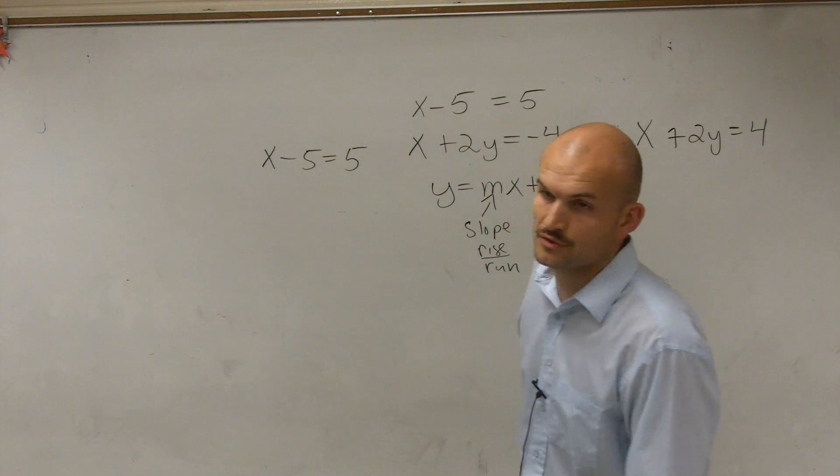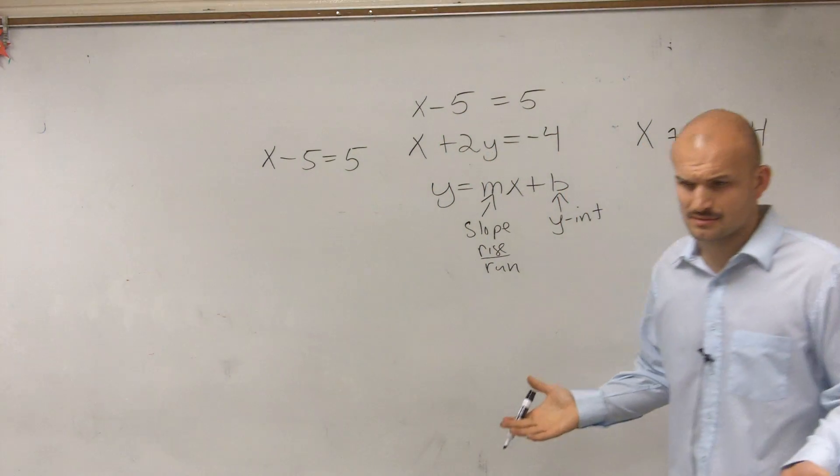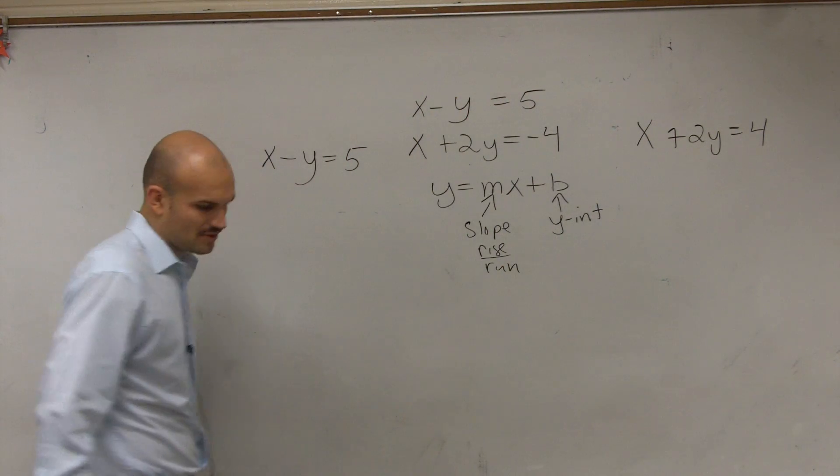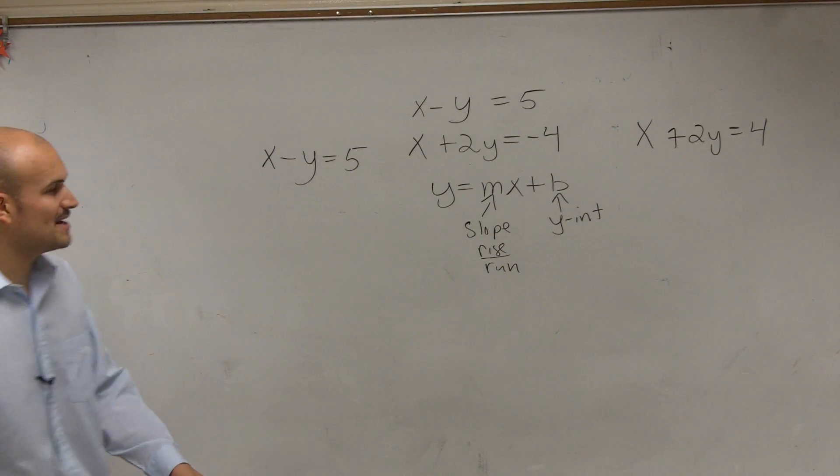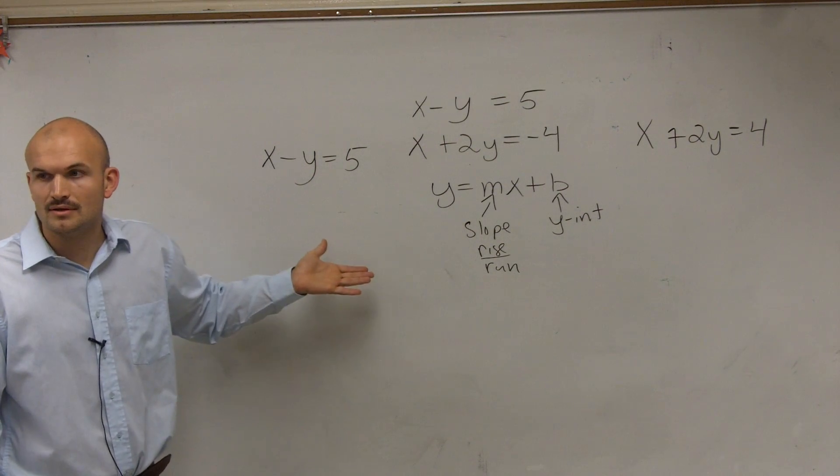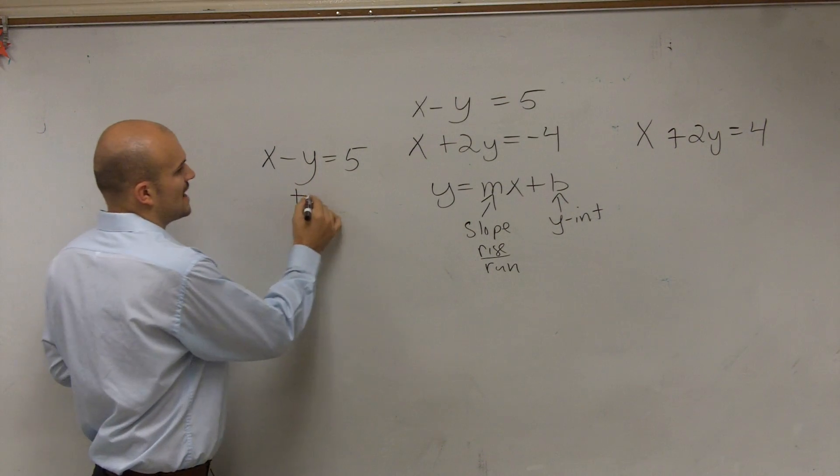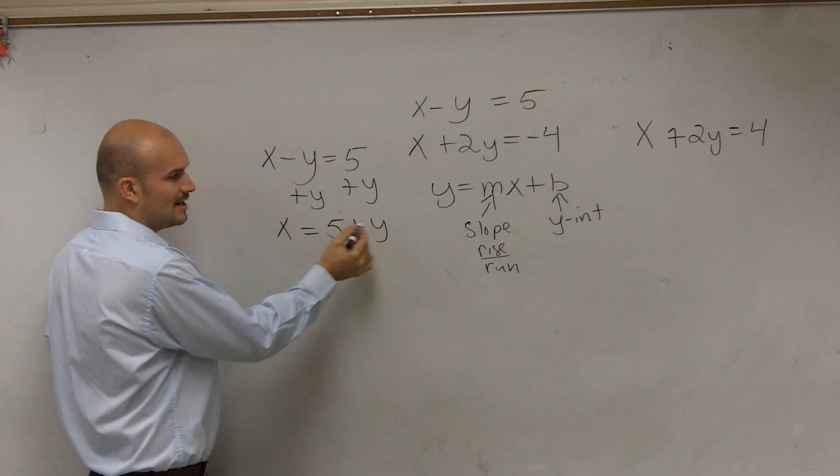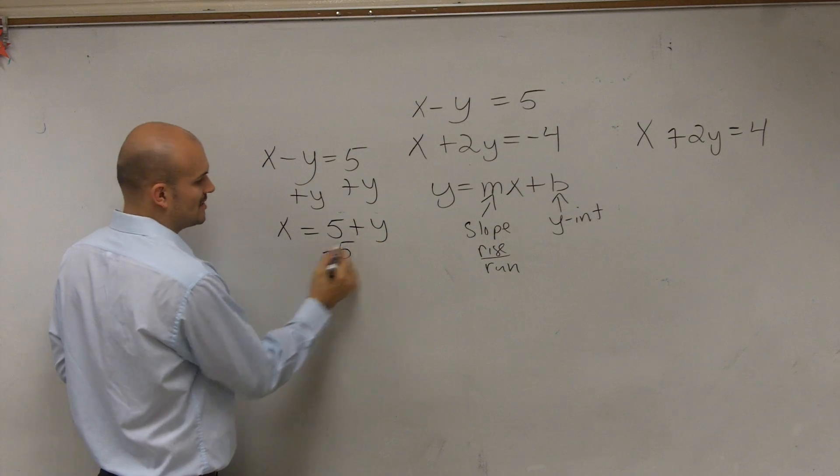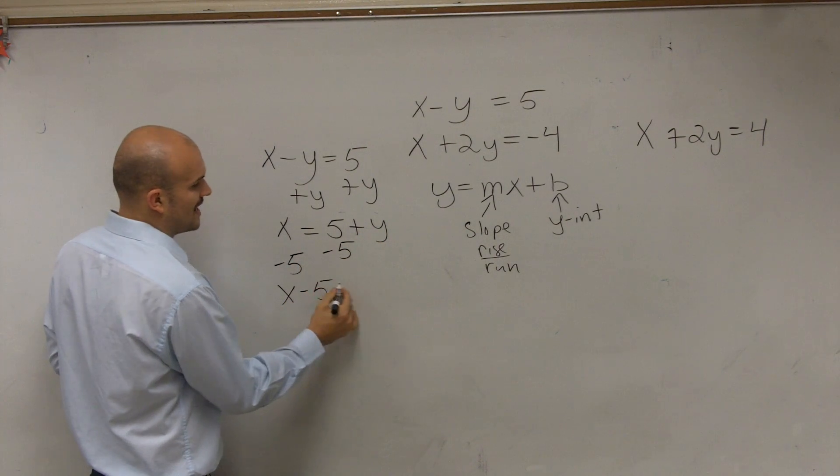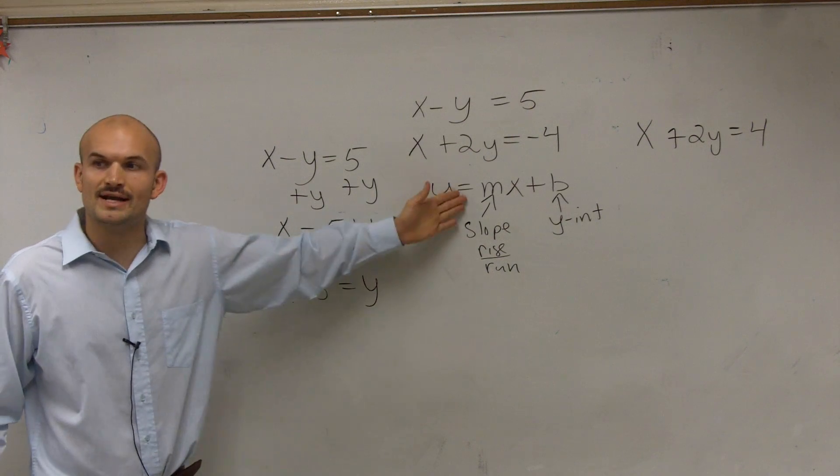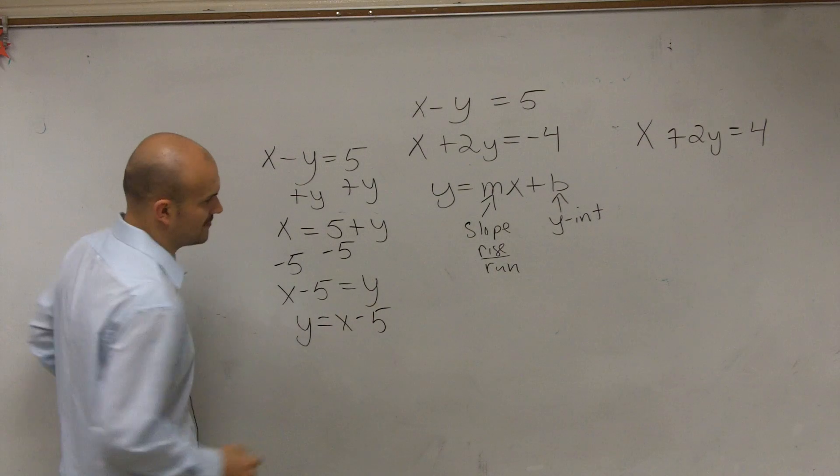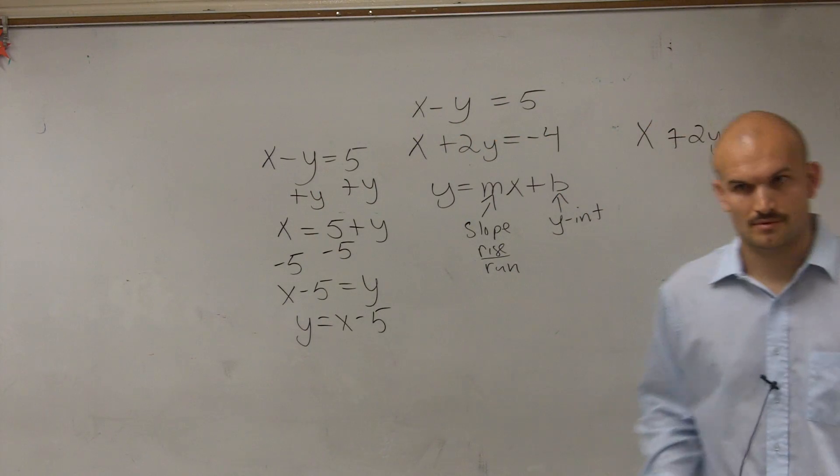Well, in the first problem, I have x minus y - I'm sorry, I don't know why I wrote that. OK, I do have a y. Wrote the wrong equation. So I have x minus y equals 5. How do you get the y by itself? There's multiple ways to do this. One way is you can just add the y to the other side, so you have x equals 5 plus y. Then how do you get the y by itself? Subtract 5. So now you have x minus 5 equals y. But we always like to write it as we read it, so we write y equals x minus 5. Does everybody follow me with that?